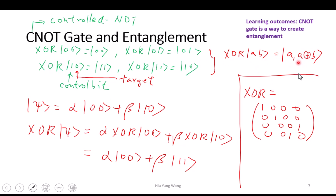In the exclusive-OR operation, when A (the control qubit) is zero, anything XOR zero is itself — zero XOR one is one, zero XOR zero is zero. But if A is one, then this becomes the negation of the target. You can review the XOR truth table if needed. This is the control-not gate, and here is its matrix.